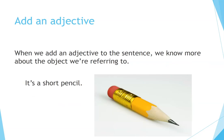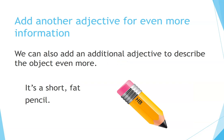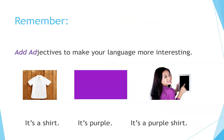When we add an adjective to the sentence, we know more about the object we are referring to. For example: 'It's a short pencil.' We can also add an additional adjective to describe the object even more: 'It's a short fat pencil.' Remember, add adjectives to make your language more interesting.